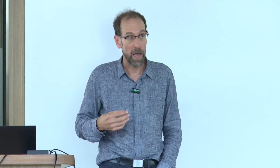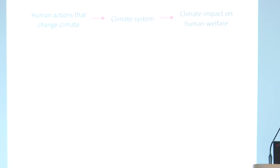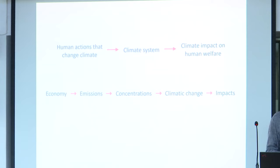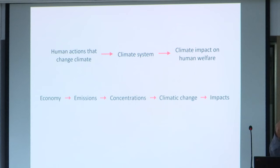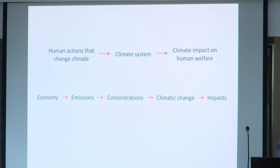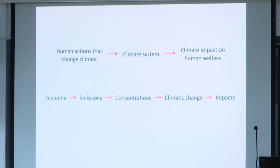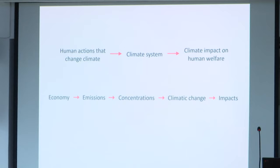I'm going to start by giving you the highest level overview of how I think about the climate problem. There are really four fundamental categories of things we can do about climate, and it's only in that context that it makes sense to think about solar geoengineering. If you think about the basic causal chain: economic activities produce CO2 emissions each year, those build up in the atmosphere as concentration, the concentration causes climate change, and climate change in turn causes harms to humans and the natural environment. You can basically break that chain in four places.